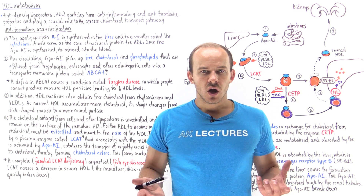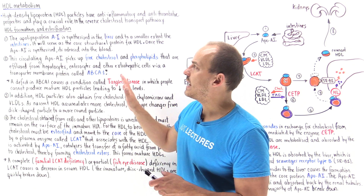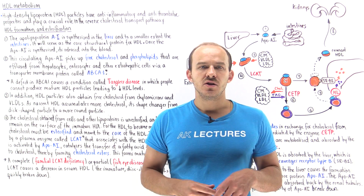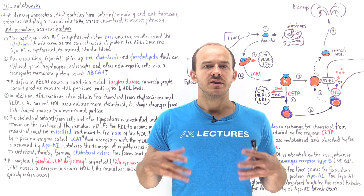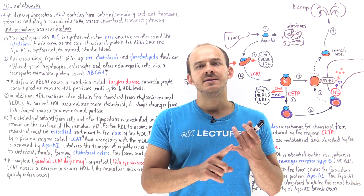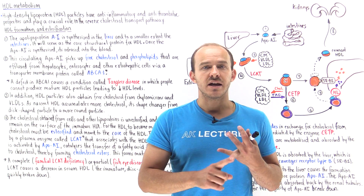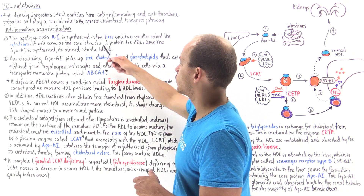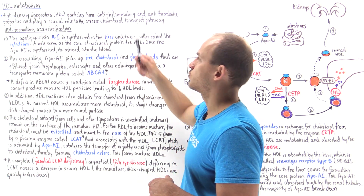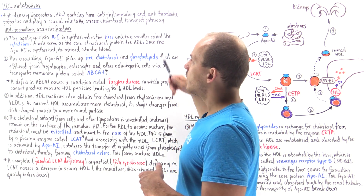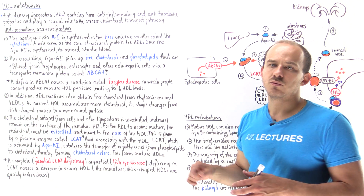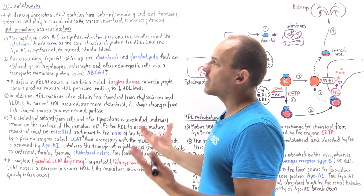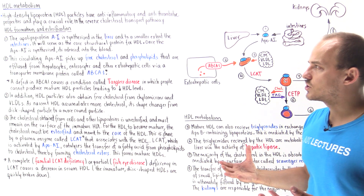The final lipoprotein we're going to talk about will be HDL, high-density lipoprotein. As you might already know, this is what we call good cholesterol. That's because HDL contains anti-inflammatory and anti-thrombotic properties. In addition, it plays a very important role in the reverse cholesterol transport pathway, which we'll talk about in the next lecture.